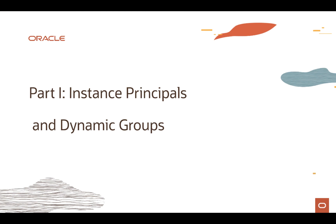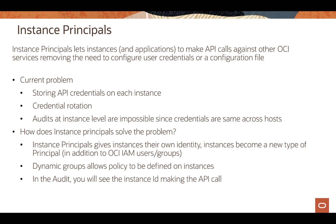Let's talk about instance principles and dynamic groups. Say you have an OCI instance, or an application running on an OCI instance, that needs to make an API call to use another OCI resource or service. Without instance principles, you would have to take your credentials — API keys or whatever credentials you use — and store them on those OCI instances. If there are multiple instances, you'd have to store configuration files across all of them.